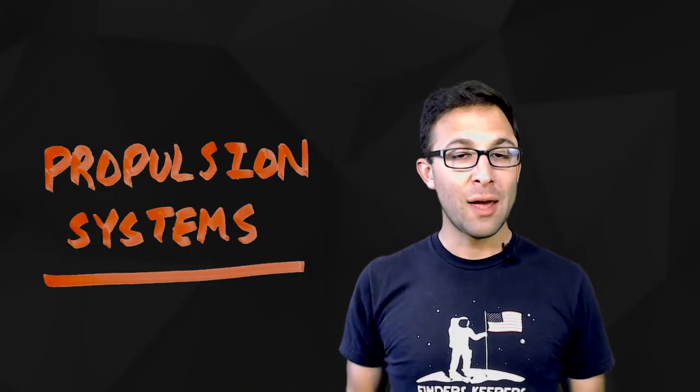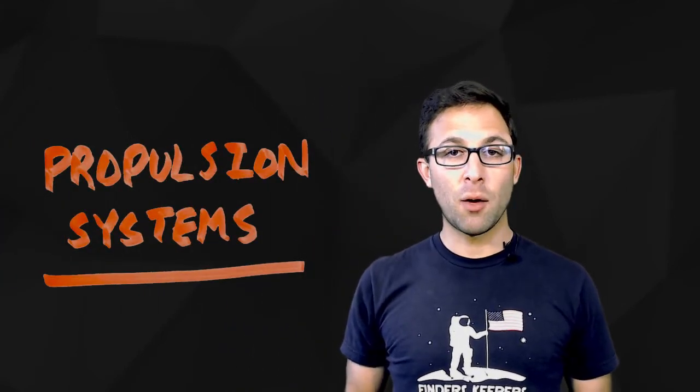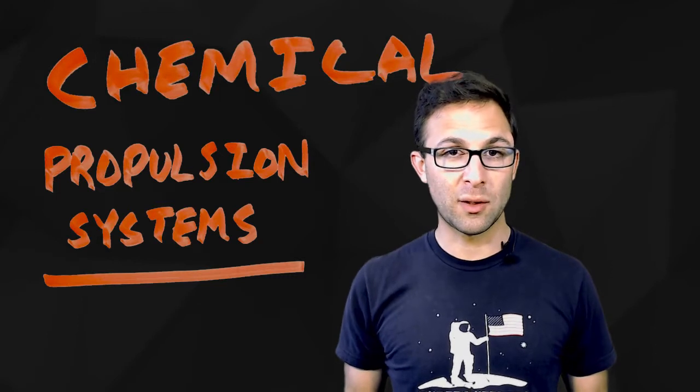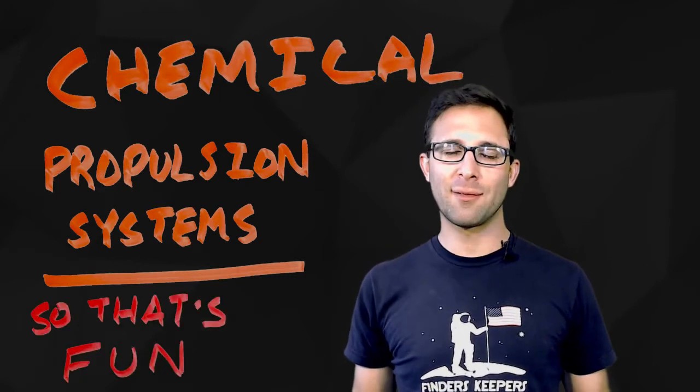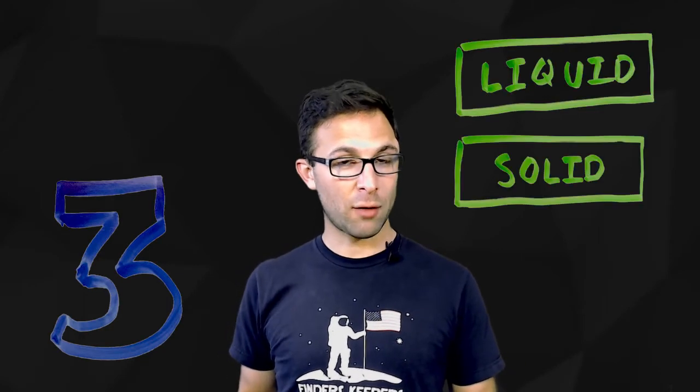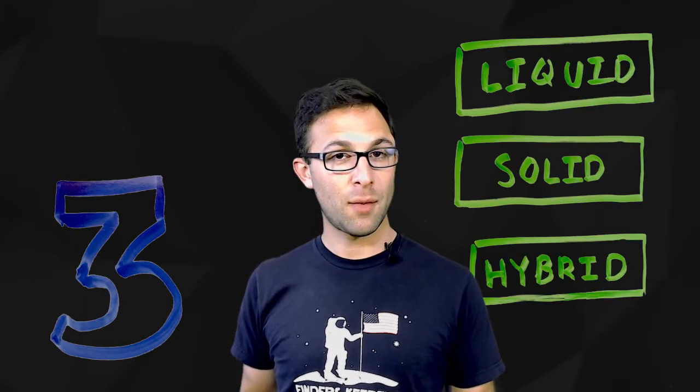There are many different types of rockets, or if we're using a more general term, propulsion systems. Today we're going to talk about chemical propulsion systems, where there is a chemical reaction used to go really fast. We're going to talk about three common ones: liquid rockets, solid rockets, and hybrid rockets.